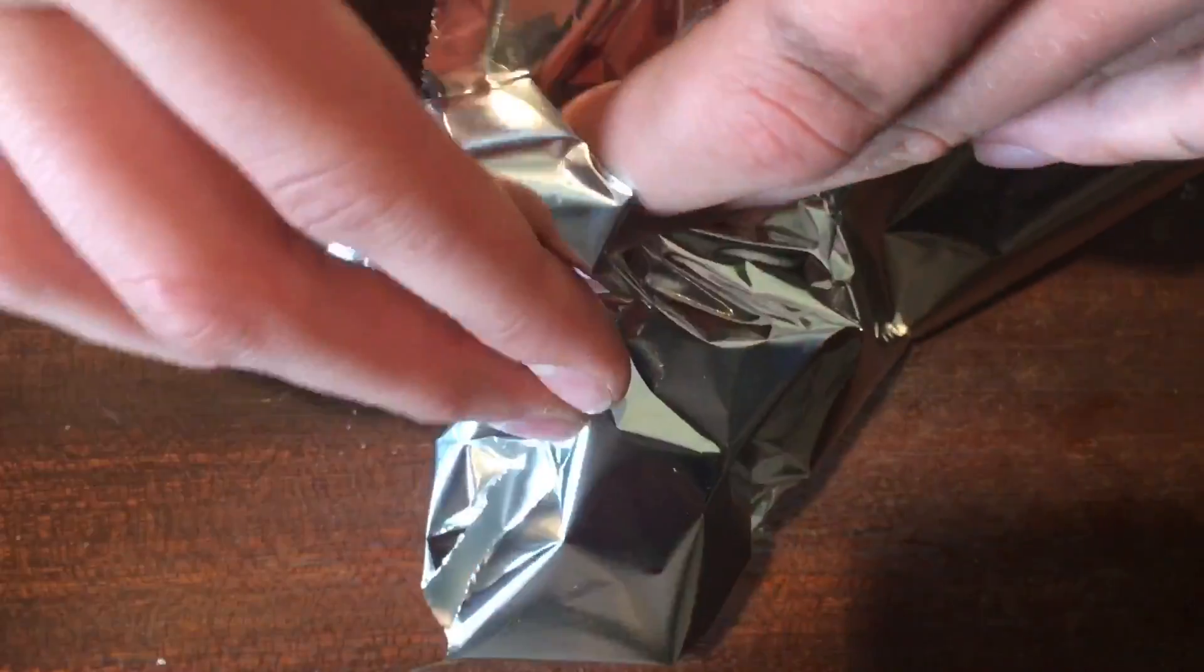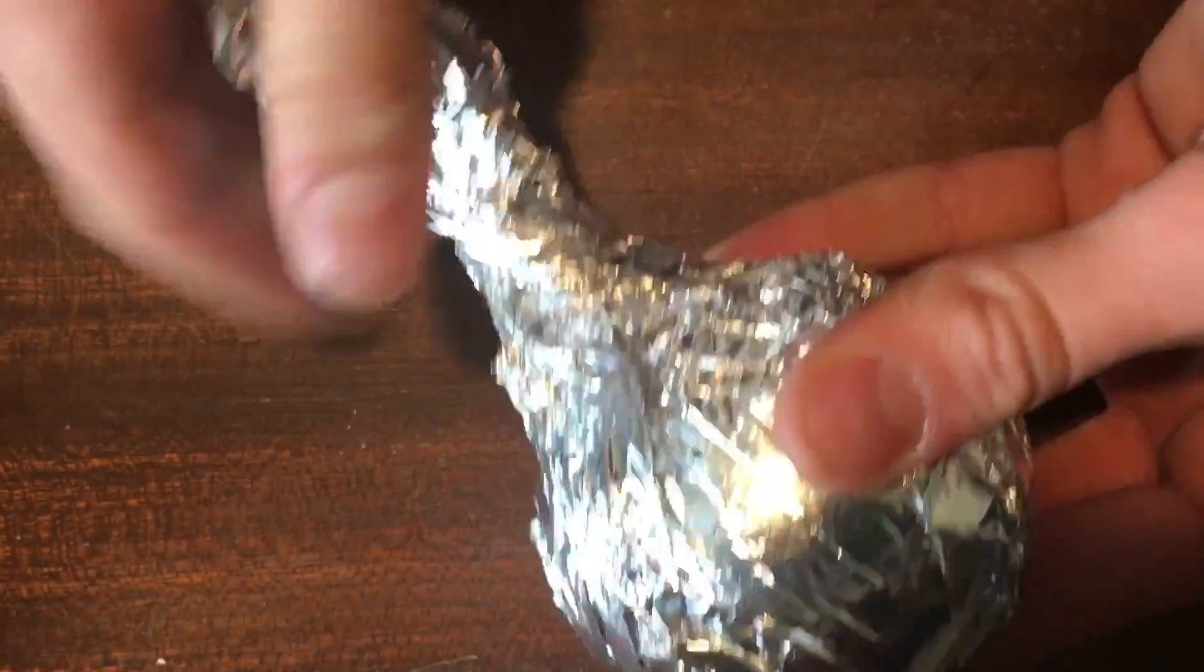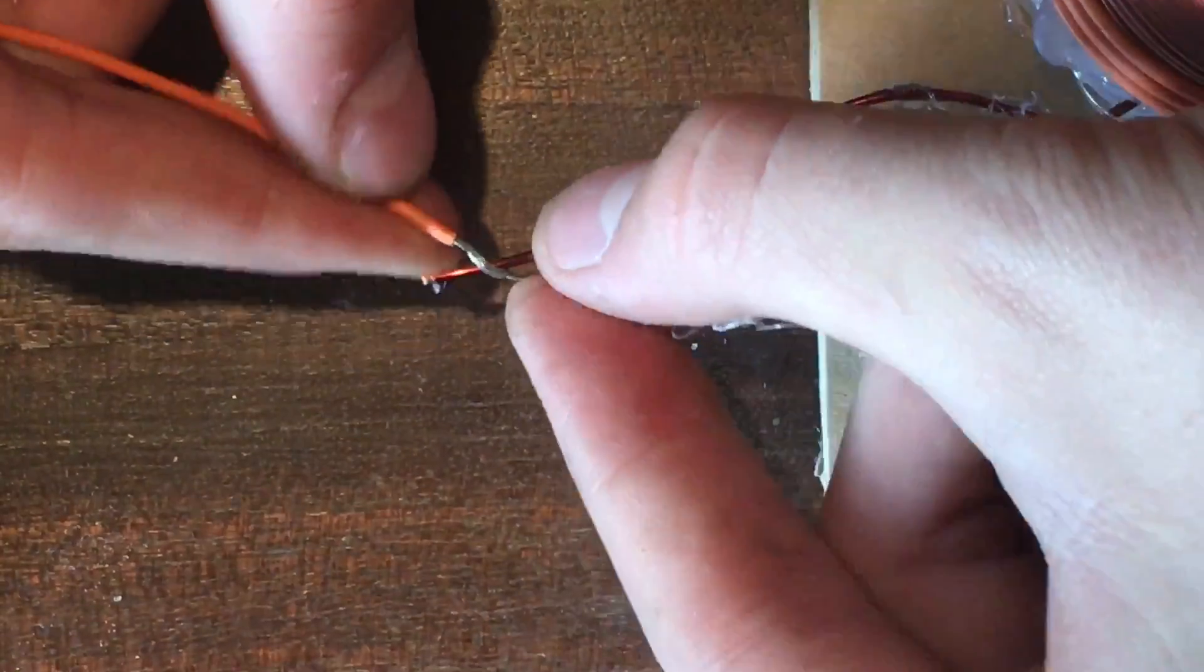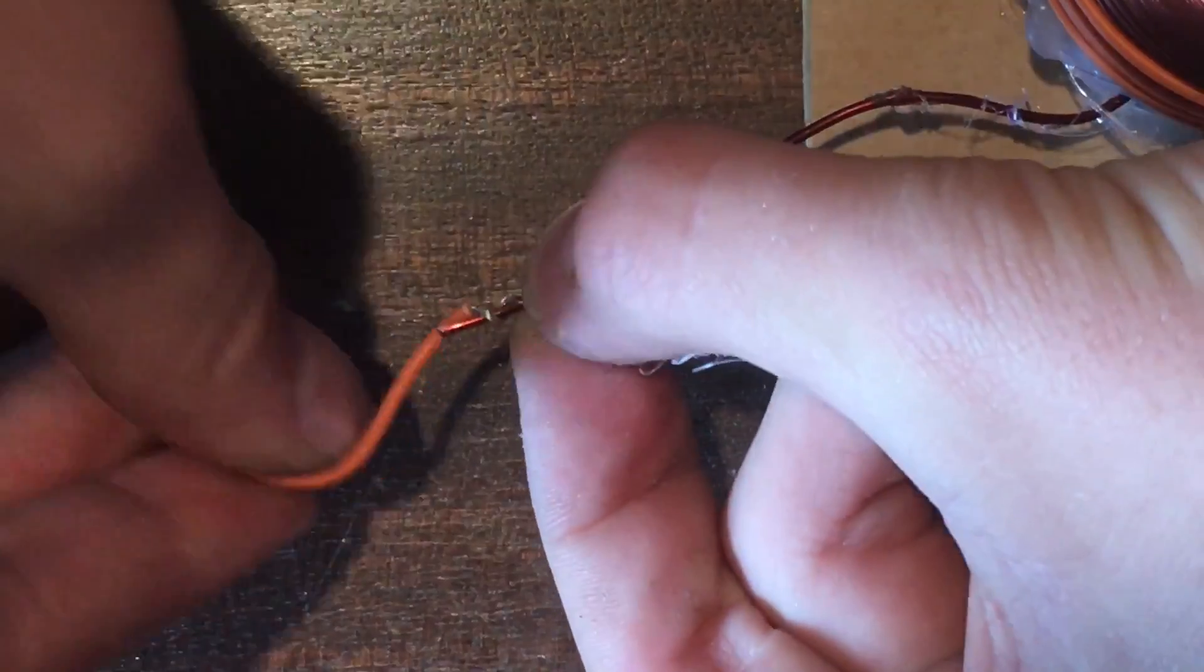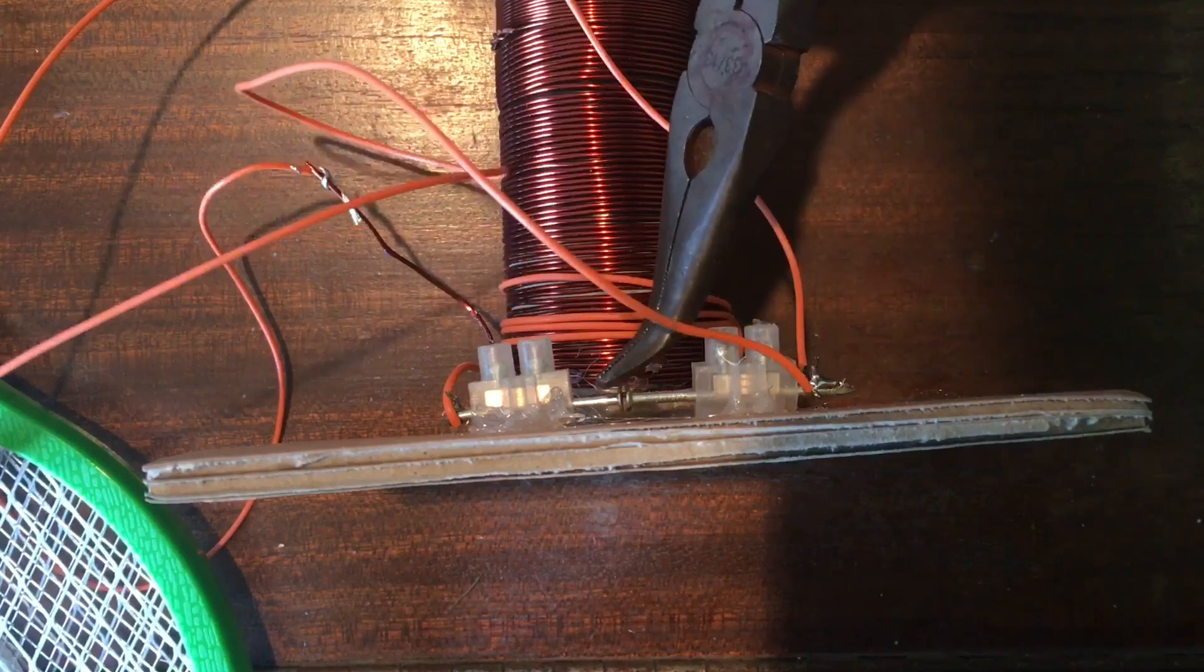Next, wrap a tennis ball in tin foil like this to make the top load. Smooth it down and twist the end. Wrap the top wire from the secondary coil around it and glue it in place. Then take a wire and attach it to the bottom wire of the secondary coil. You can solder or twist this in place.